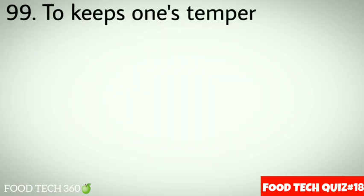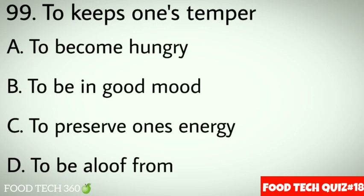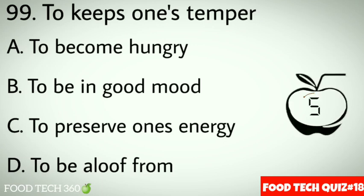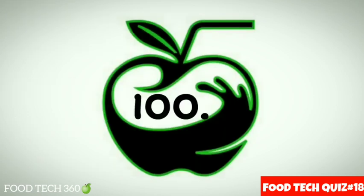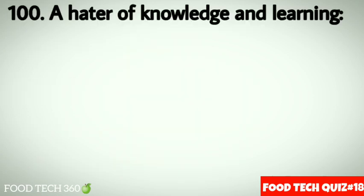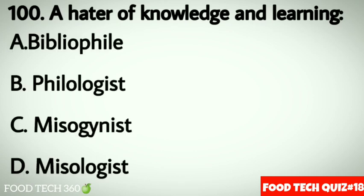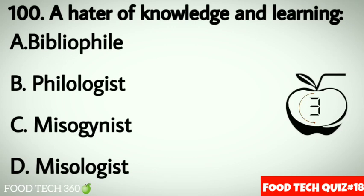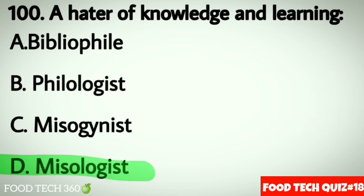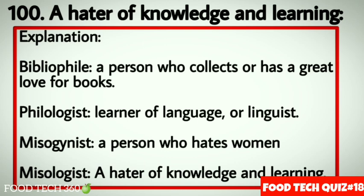Question 99: To keep one's temper. Options: A. To become hungry, B. To be in good mood, C. To preserve one's energy. Correct answer: B. To be in good mood. Question 100: A hater of knowledge and learning. Options: A. Bibliophile — a person who collects or has a great love for books. B. Philologist — a learner of language or linguist. C. Misogynist — a person who hates women. D. Misologist — a hater of knowledge and learning. Correct answer: D. Misologist.